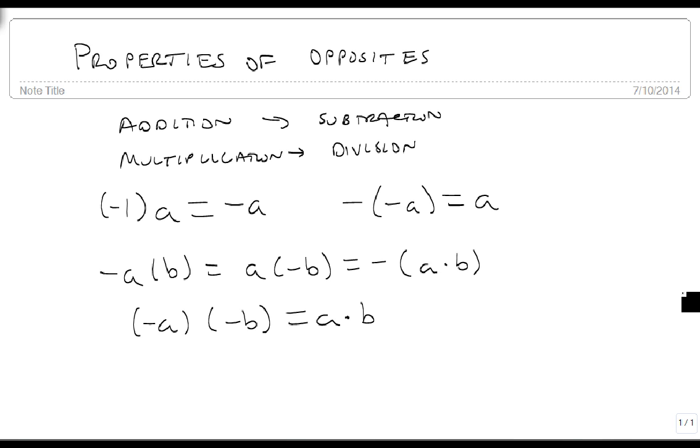And we have distributive properties as well. If we have minus times A plus B in parentheses, then they both become negative. But if one already is negative, then when I distribute, it becomes positive.